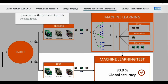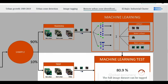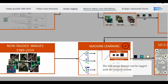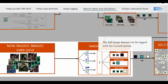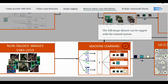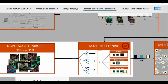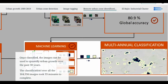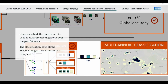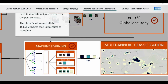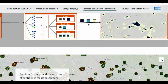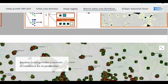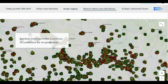Once this is done, the algorithm is used on the testing dataset to evaluate how well it learned and can recognize each class, making it possible to measure its accuracy. Finally, once an adequate performance is achieved, all unlabeled images can be classified for each of the annual Landsat GeoMedian images, which go from 1989 to 2019. As a result, we can trace urban growth throughout time in different regions of the country.